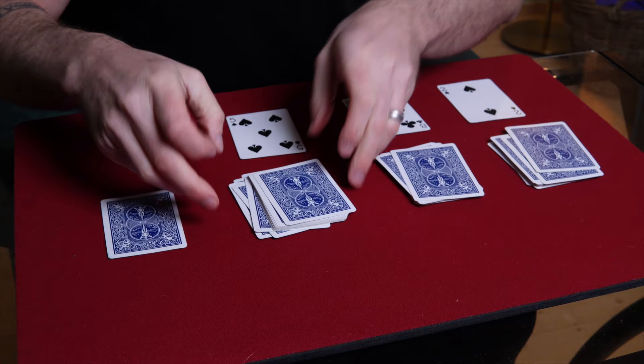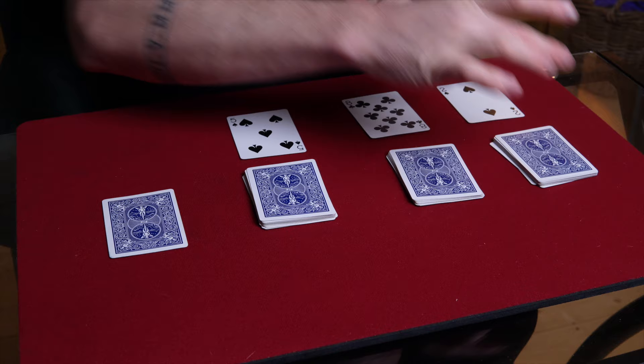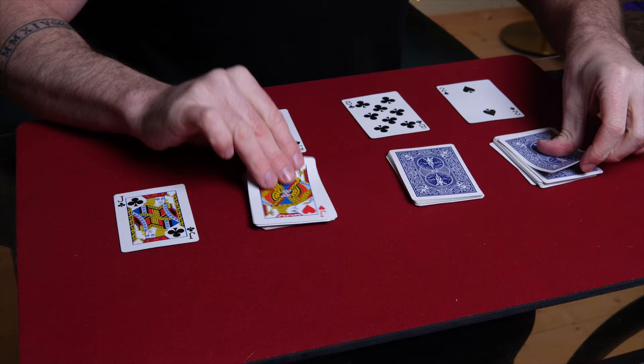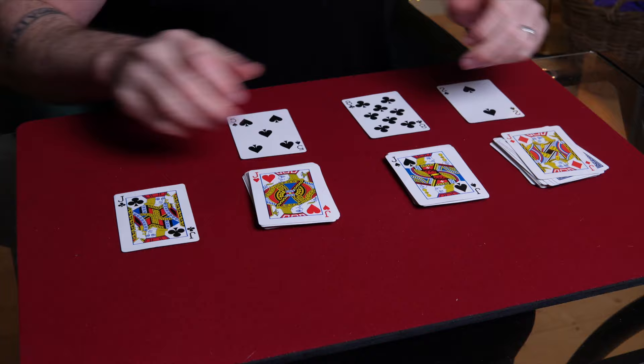Now in this, the spectator can do all of that. They do it all themselves. They could cut anywhere they want. Obviously, these cards are completely random, but you say, look, I predicted a jack. If we take a look at these three cards now, you actually found all three jacks. And you've got an absolutely amazing, amazing ending to this. I think this is such an amazing trick.